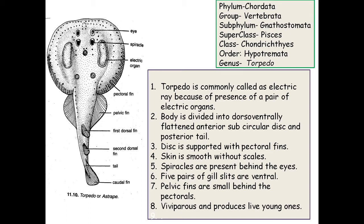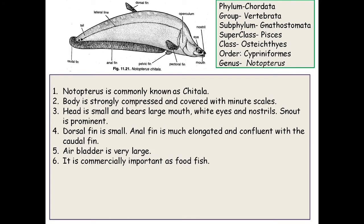Pelvic fins are small and present behind the pectorals. Torpedo is viviparous and produces live young ones. It has a first and second dorsal fin, and the tail is covered by the caudal fin. These are the characteristic features of Torpedo, the electric ray.